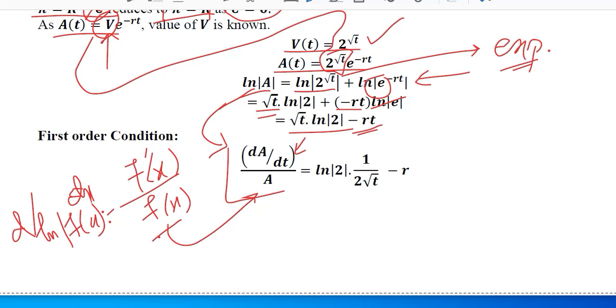On the right-hand side, we have taken the derivative. Natural log of 2 will come outside as a coefficient, whereas the derivative of the natural log of square root t will be equal to this.